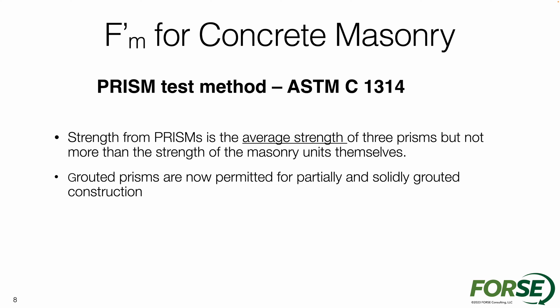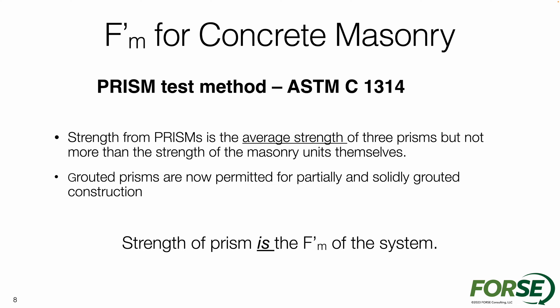The other method — the prism test method — is going to look at testing and determining the overall strength of our designs. We're going to look at the average of at least three different prisms, but that average for the testing of the assembly can't be more than the actual strength of the units themselves. When we have partially grouted or solid grouted walls, we can now use grouted prisms — a prism of block, mortar, and then grout — and test that sample to determine the overall strength. The strength of the prism test is going to be the F'M — the strength of the masonry assembly — used in our design.